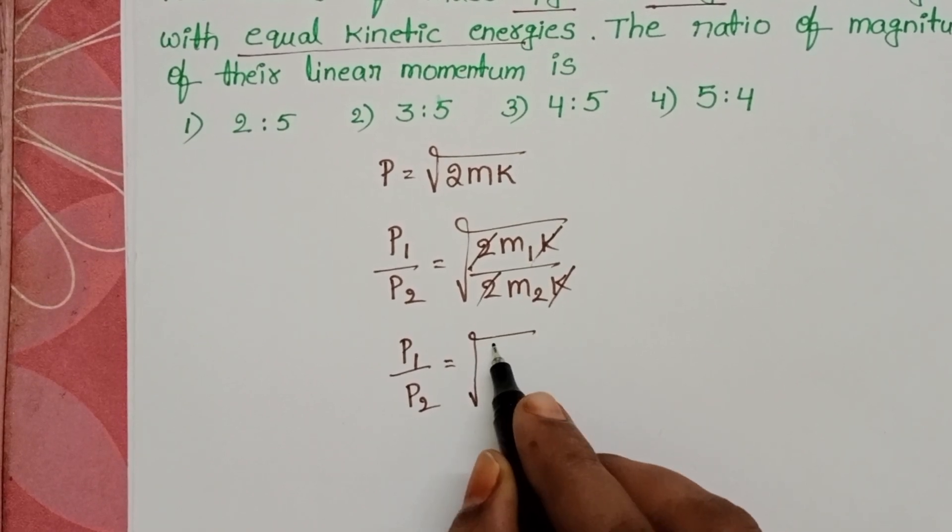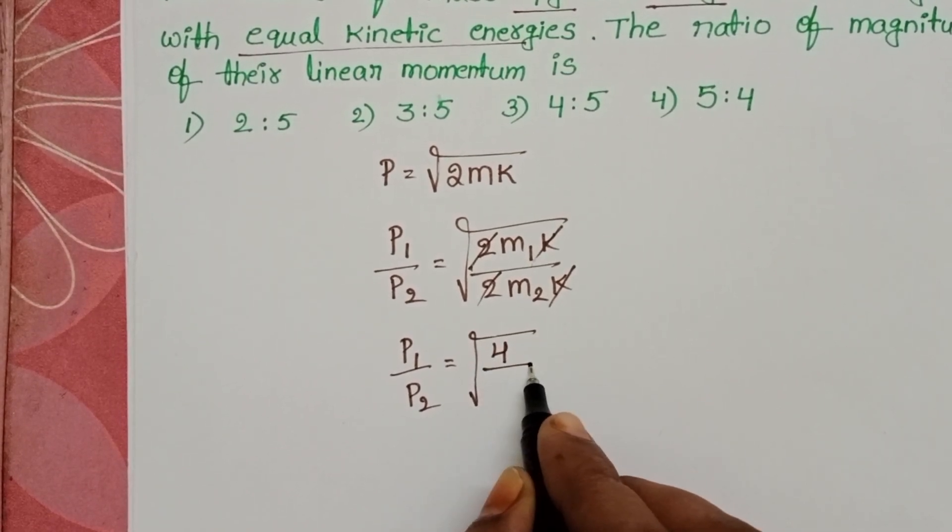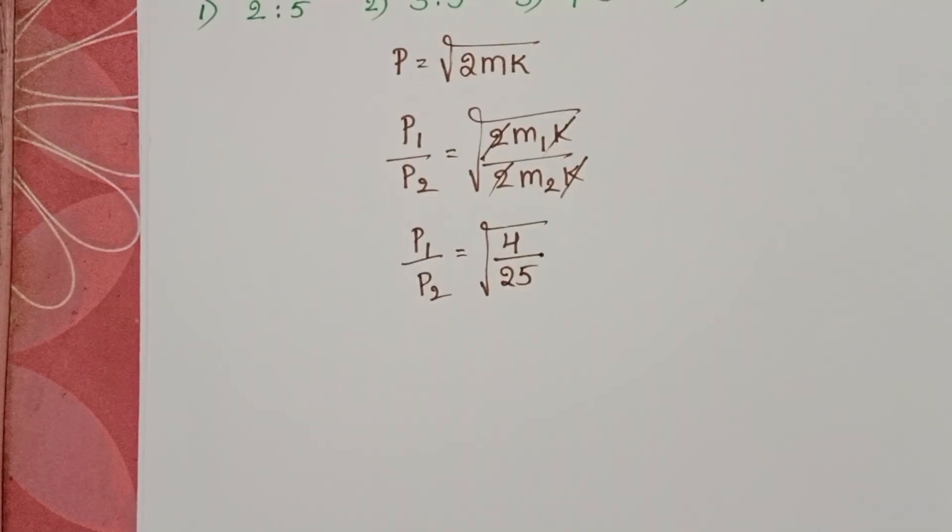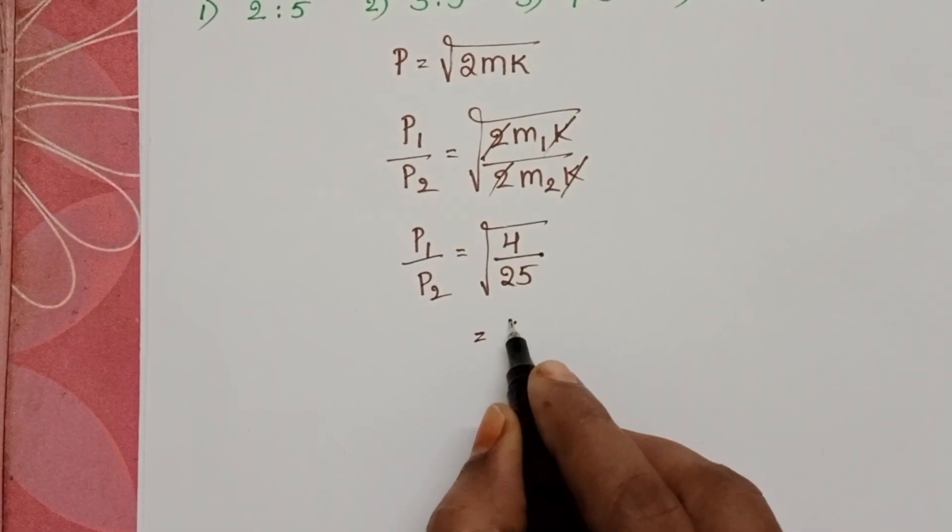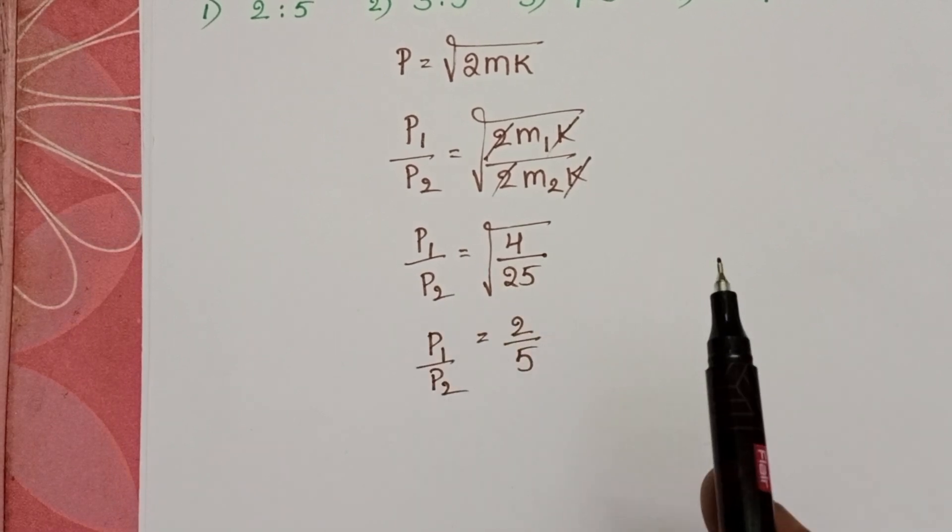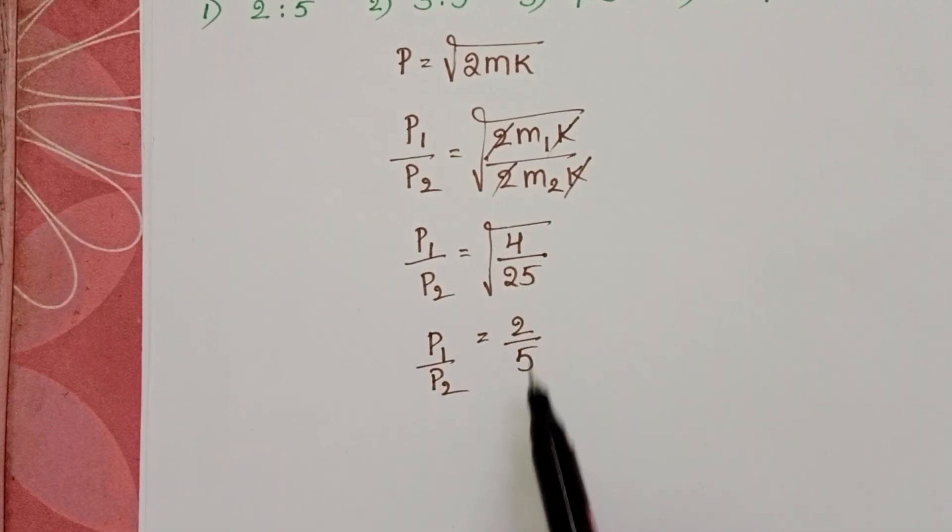Mass of the first body is 4 grams and mass of the second body is 25 grams. Square root of 4 equals 2 and square root of 25 equals 5. The ratio of linear momentum is 2 is to 5. First option is correct.